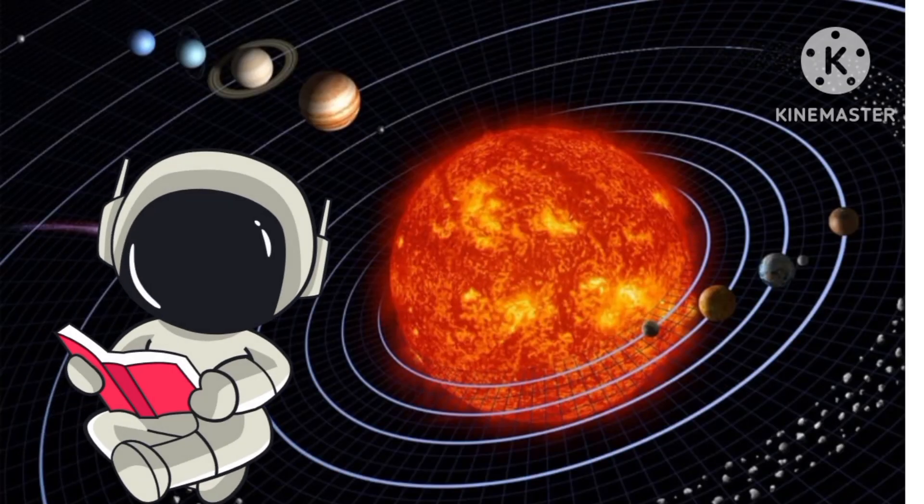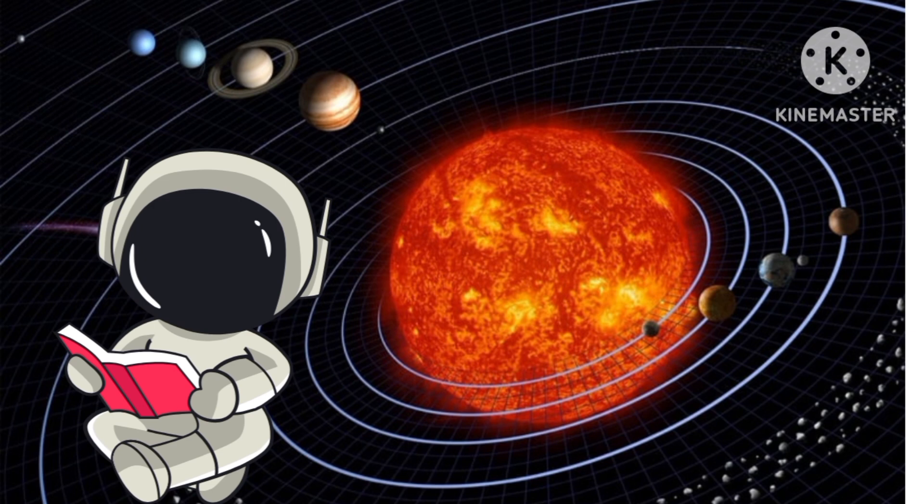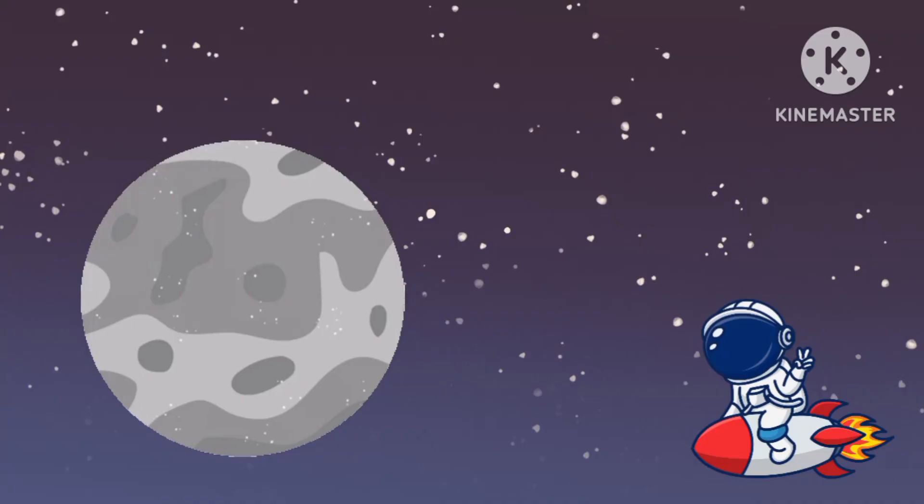And there are 8 planets in Solar System. Let's learn one by one.